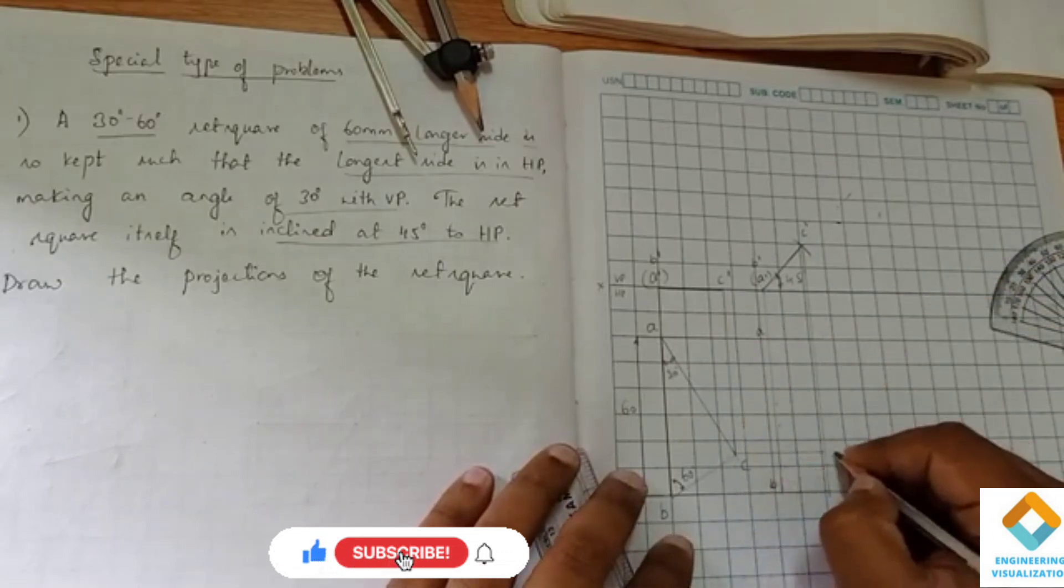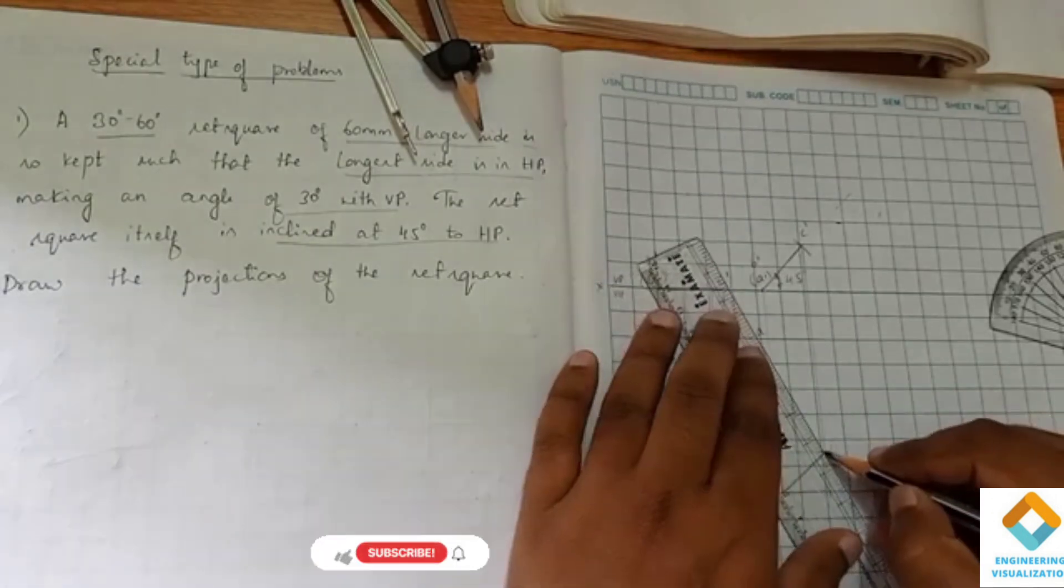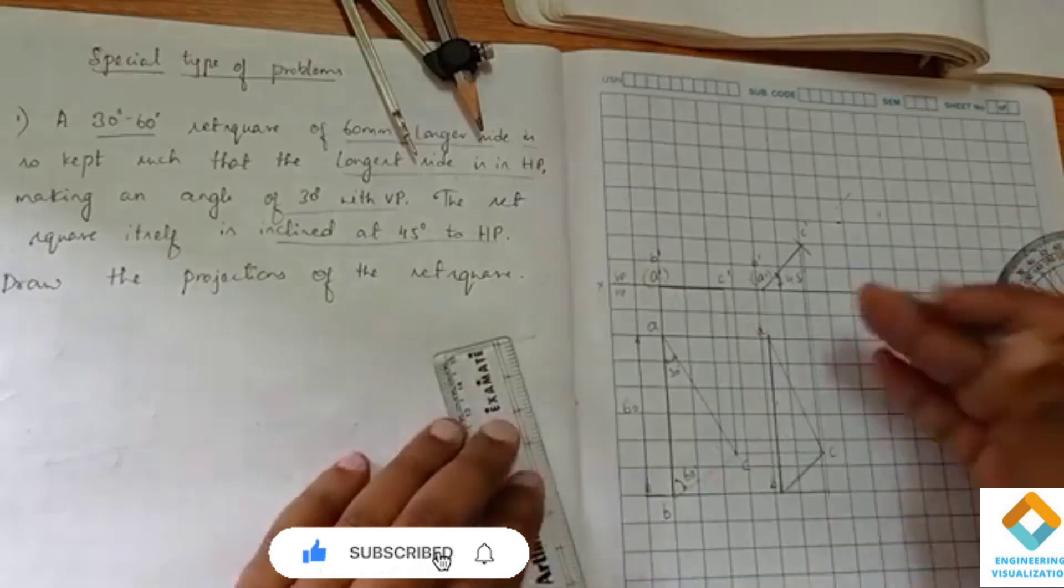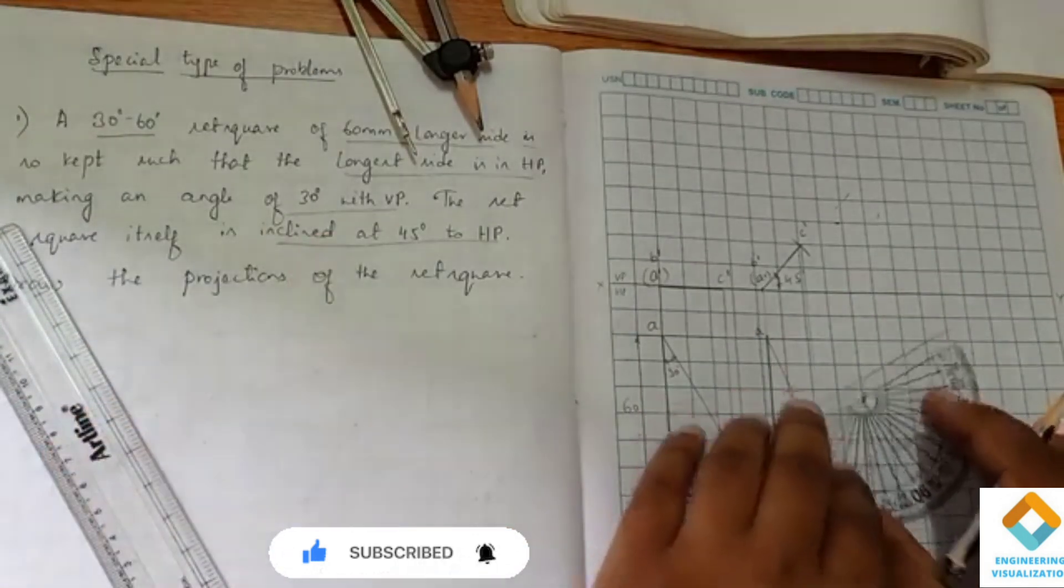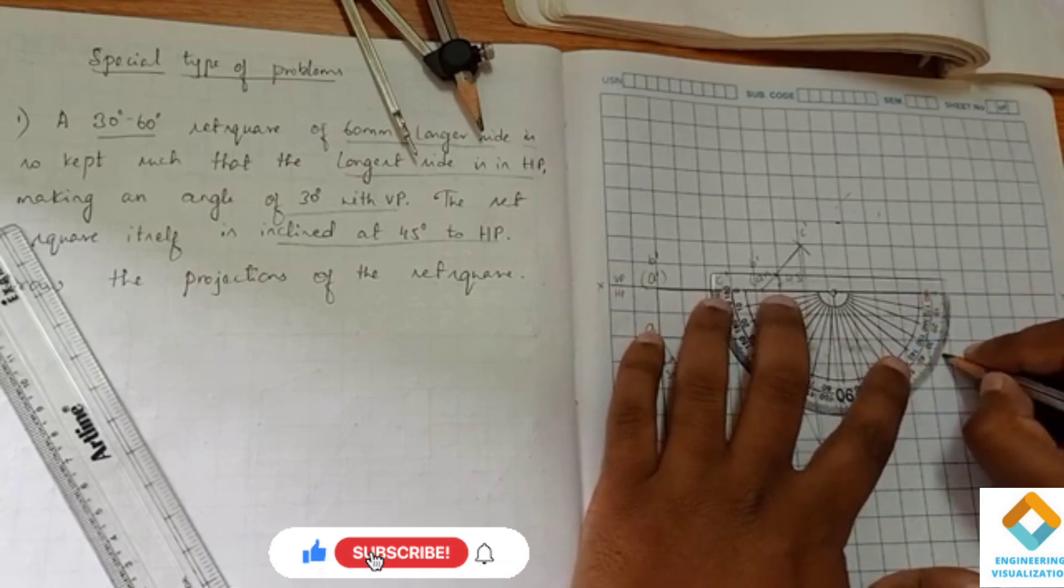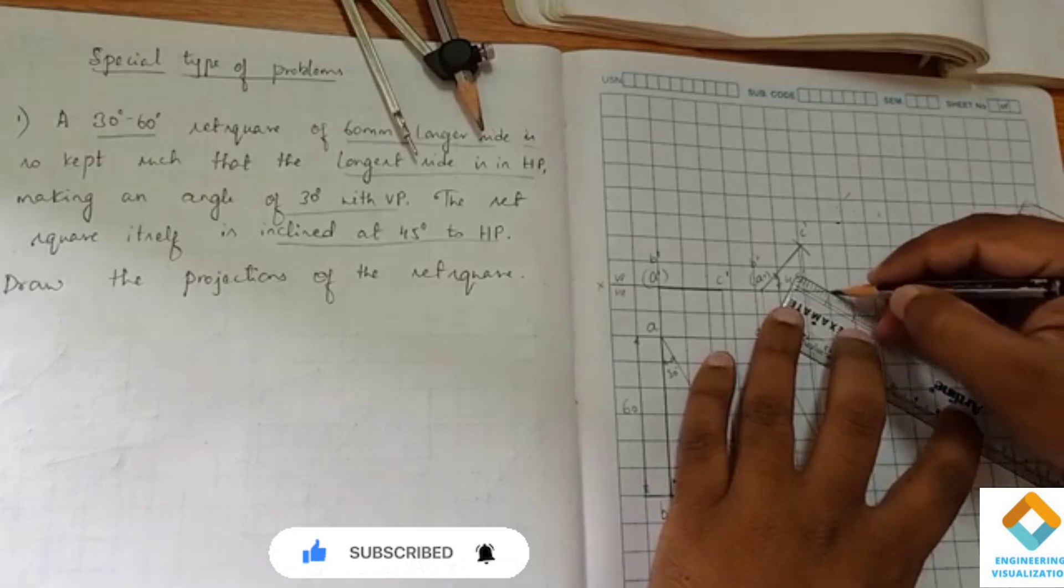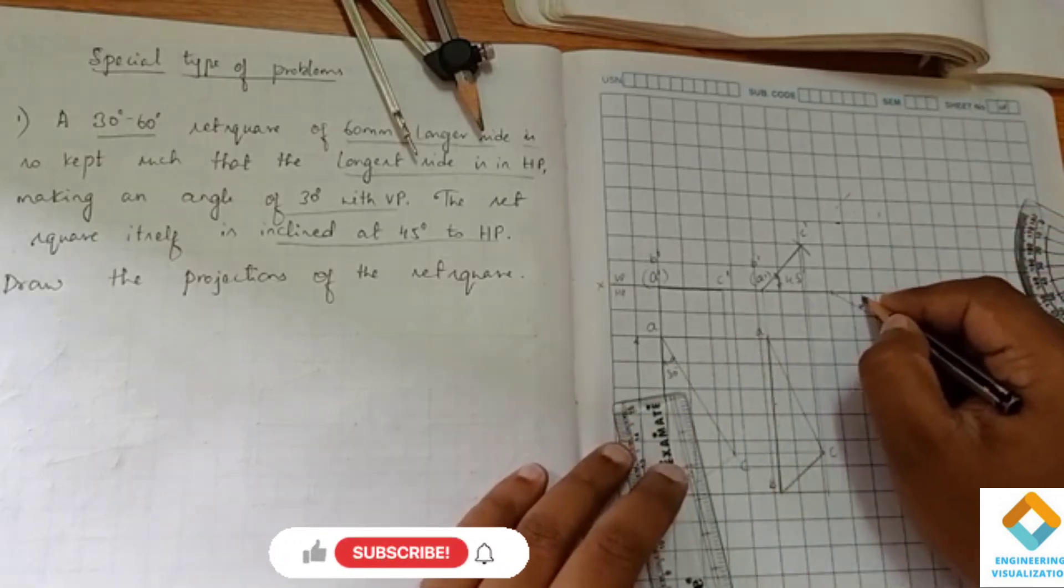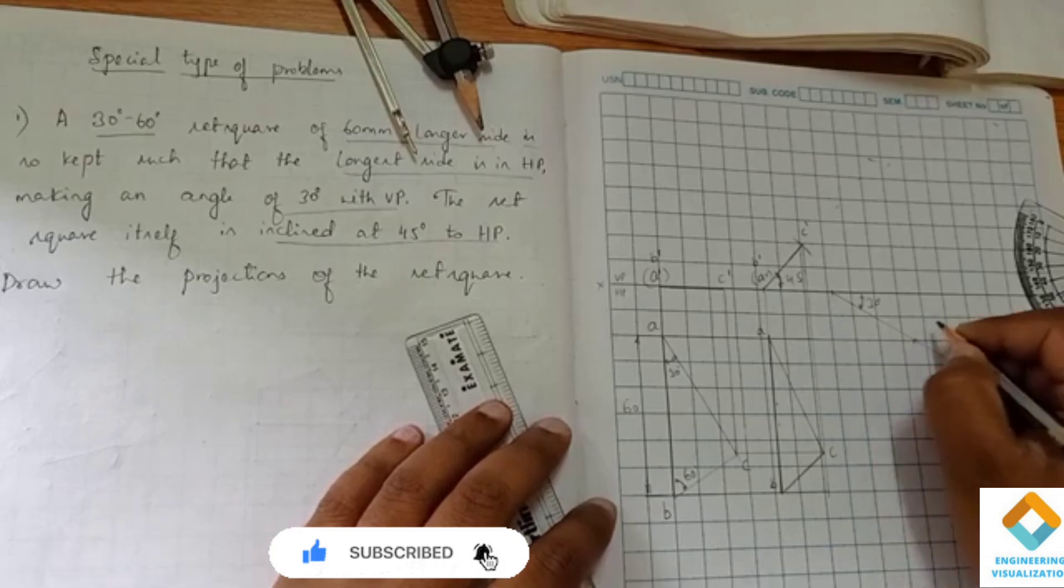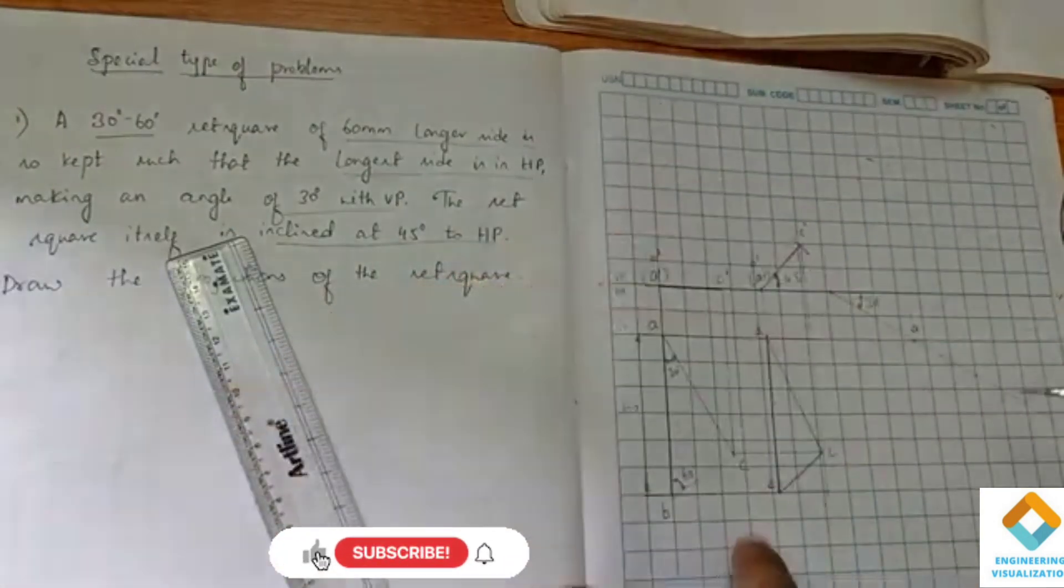This point is B and this point is C. We will join it. Now we have to draw the third position, that is inclination to VP is 30 degrees. Mark a reference point. This is 30 degree. After this we have to mark reference point A. From A to B we have to measure. We have to copy this diagram over here.